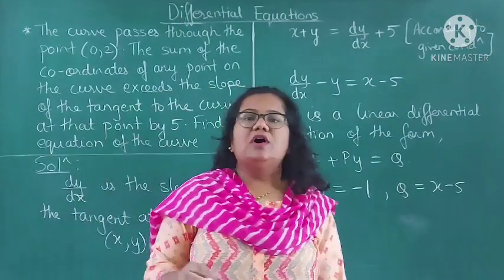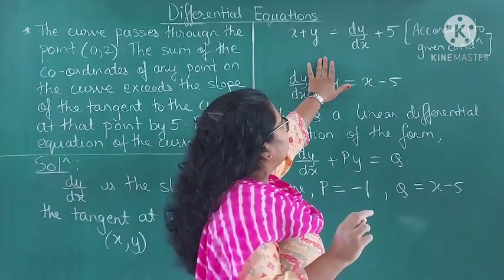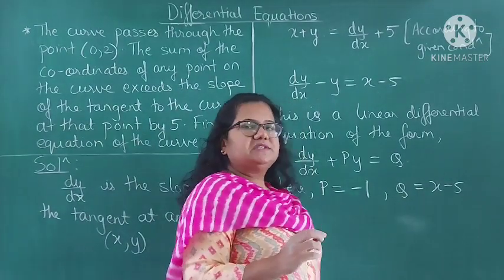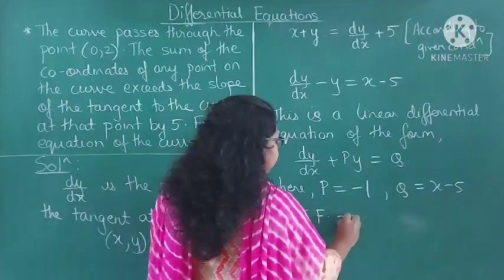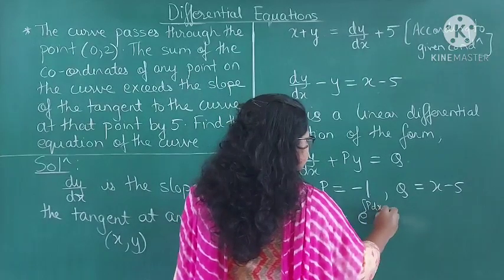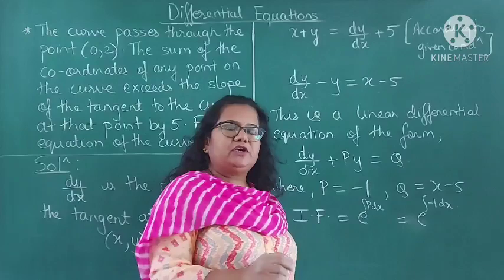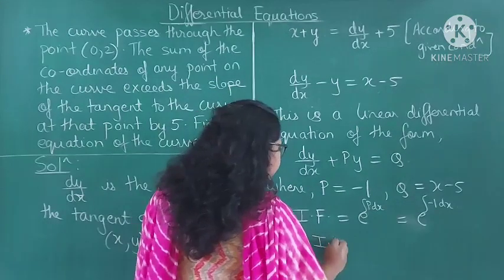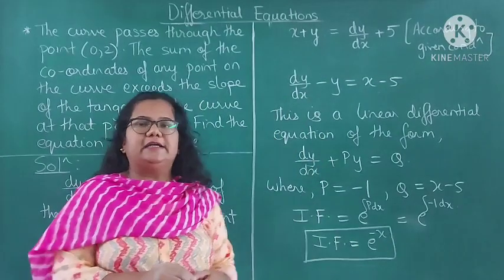So we have the condition and we have brought it to the form dy/dx plus P·y equals Q, where P is minus 1 and Q is x minus 5. After this we find the integrating factor: IF equals e raised to integration of P dx, that is e raised to integration of minus 1 dx. So the integrating factor equals e raised to minus x.